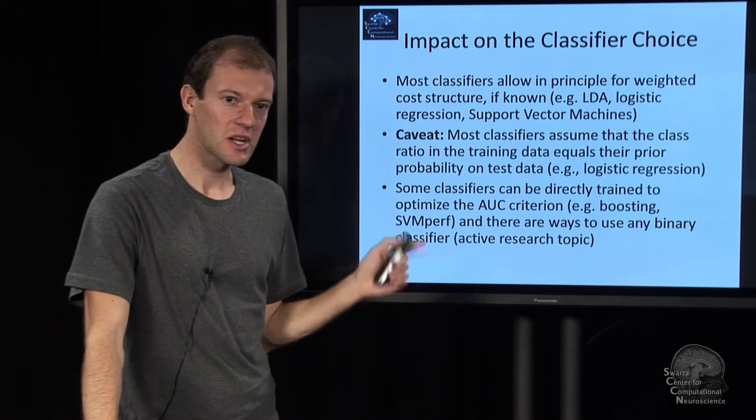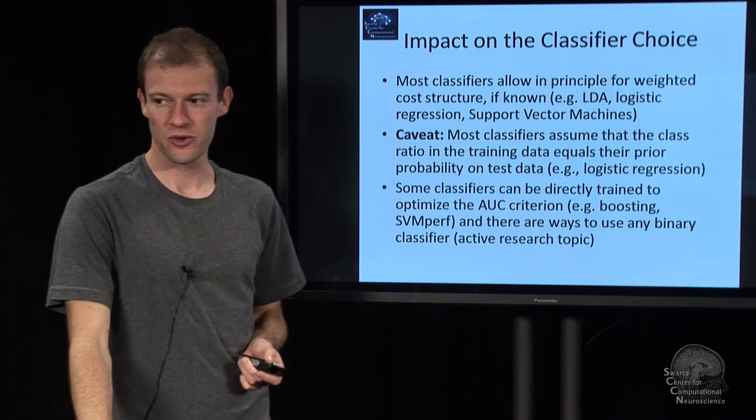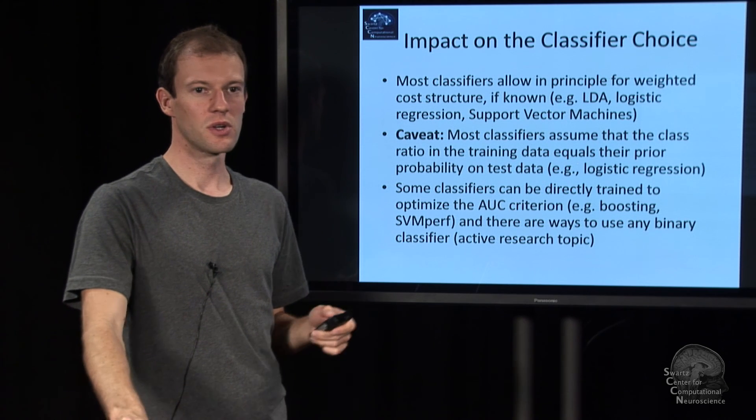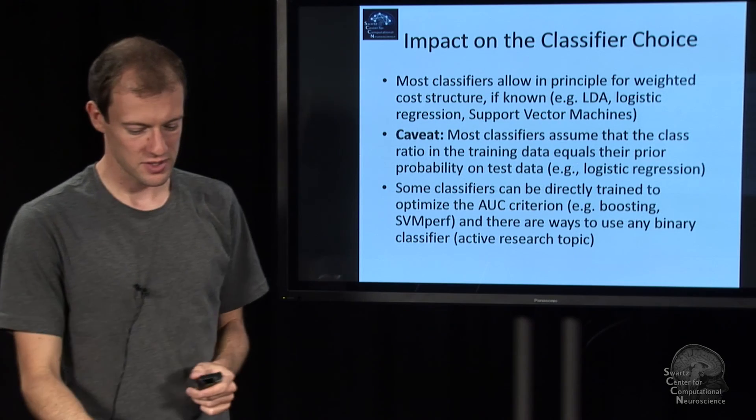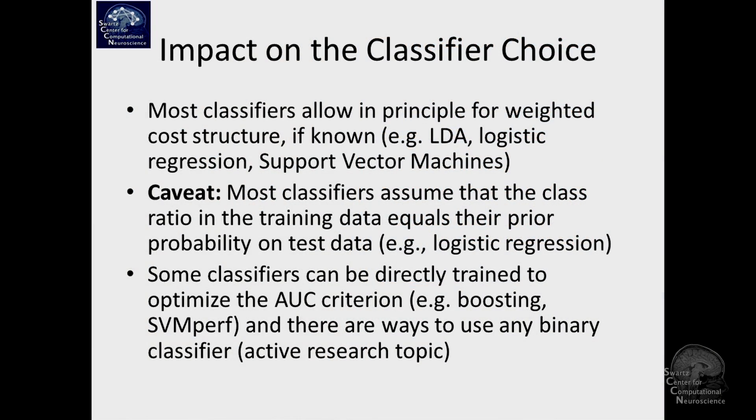So there is classifiers which can be directly optimized, say, under the area under curve criterion. There's classifiers that can optimize various other scores, F scores and so on. And, for example, the support vector framework has several rather advanced ways to learn classifiers under these sophisticated cost functions. So if you're in such a situation, that would be a place to look. And that ends this module.